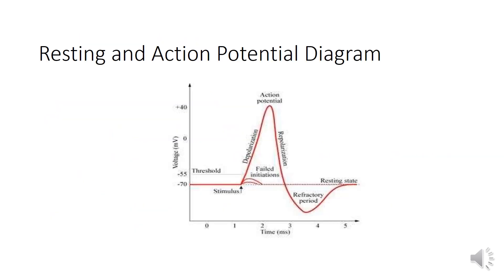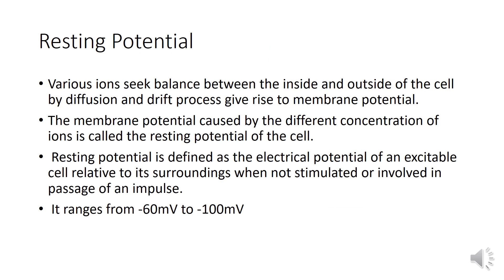Let us see the resting and action potential diagram. Various ions seek a balance between the inside and outside of the cell by diffusion and drift, giving rise to membrane potential. The membrane potential caused by the different concentration of ions is called the resting potential of the cell. Resting potential is defined as the electrical potential of an excitable cell relative to its surroundings when not stimulated or involved in the passage of an impulse.